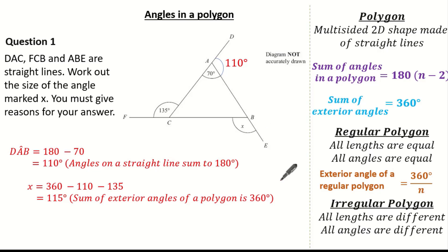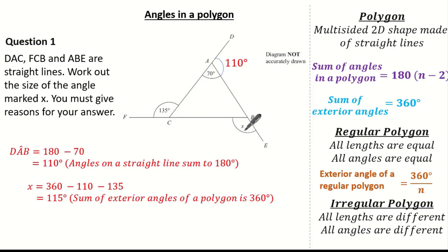The great thing about maths is there is always more than one way to get your solution. You could have worked out the interior angles of our polygon and then calculated angle X from there — either way it still would have confirmed X to be 115 degrees.